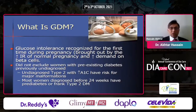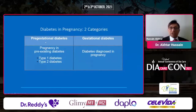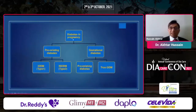When we encounter glucose intolerance recognized in the first trimester, we should be able to distinguish those who had frank diabetes before conception from those who developed it during pregnancy. This brings us to the distinction between pre-gestational diabetes and gestational diabetes. In pregnancy, pre-existing diabetes can be type 1 or type 2, whereas gestational diabetes is diagnosed in pregnancy where diabetes was not present before.